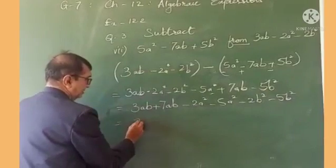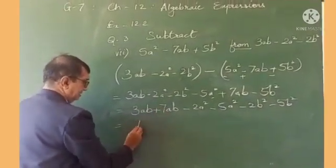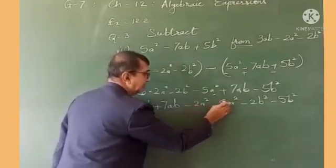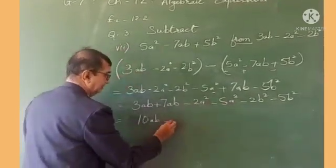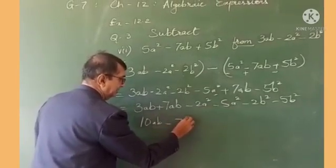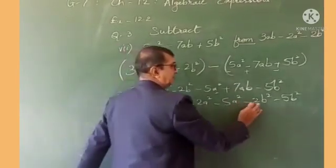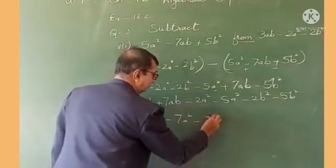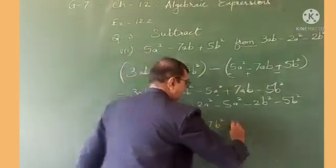Now we get 3ab + 7ab = 10ab, and -2a² - 5a² becomes -7a², and -2b² - 5b² becomes -7b². This is our answer.